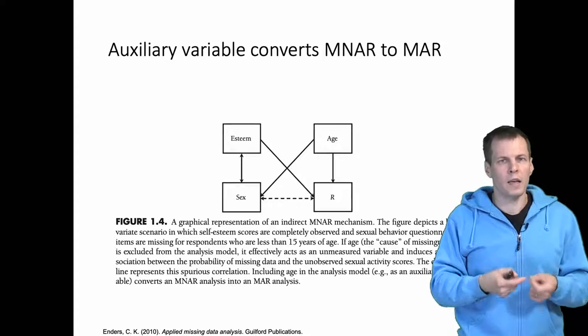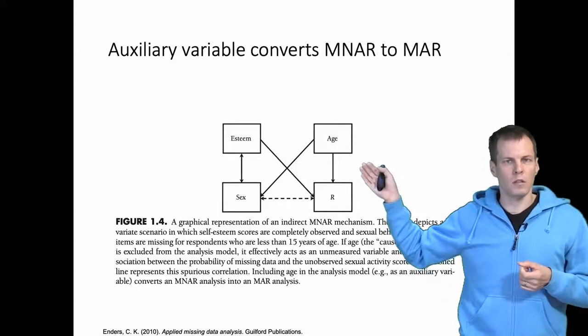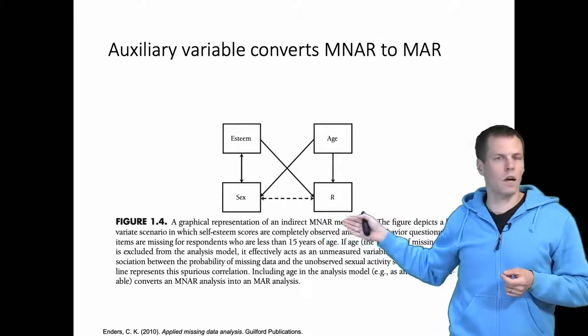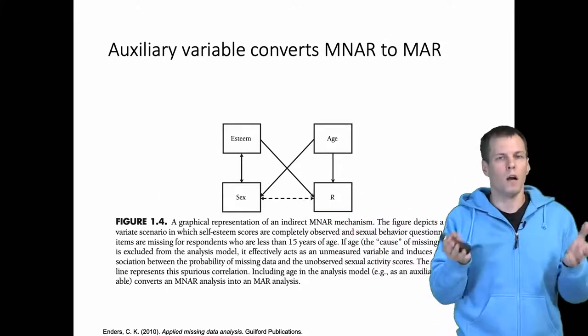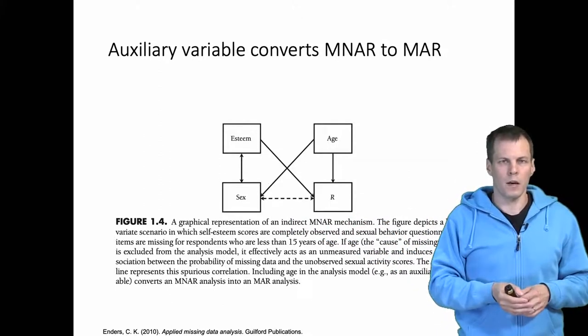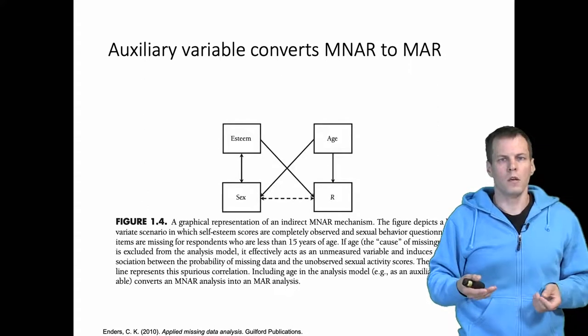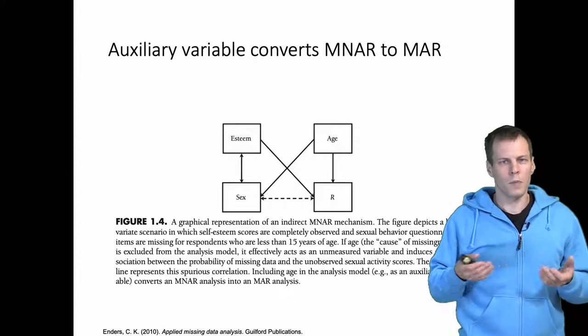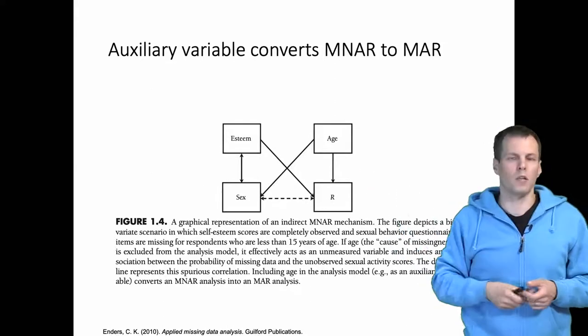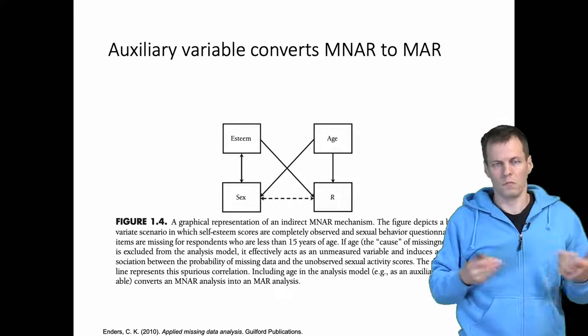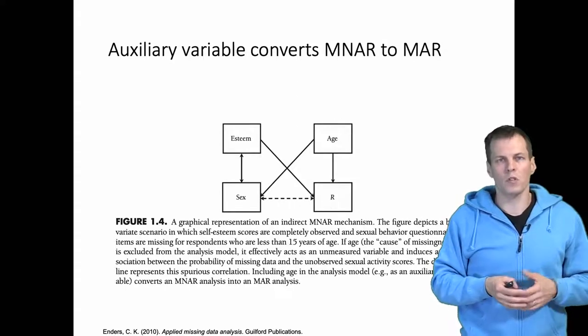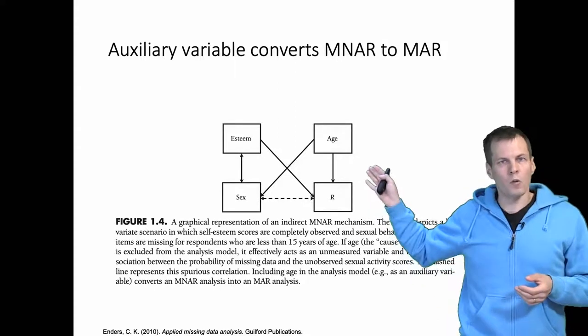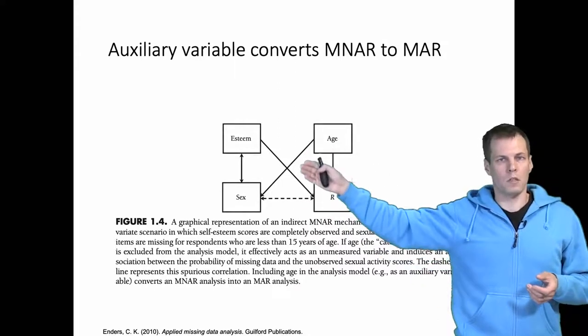Now if we add age to our missing data model, then controlling for age, sex and our selection would be uncorrelated. So that would be nice. And how do we actually go about doing this? If you do a multiple imputation study, then you simply add age as a predictor in your imputation model. Simply adding more variables into the imputation model, then run the imputation, then leave age out when you do your main analysis.